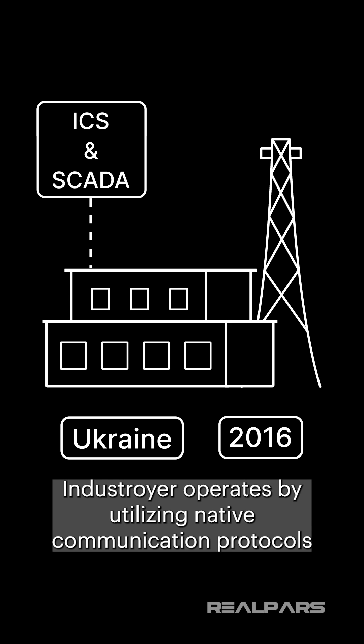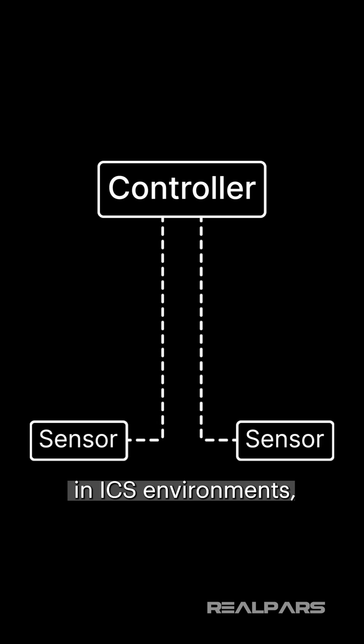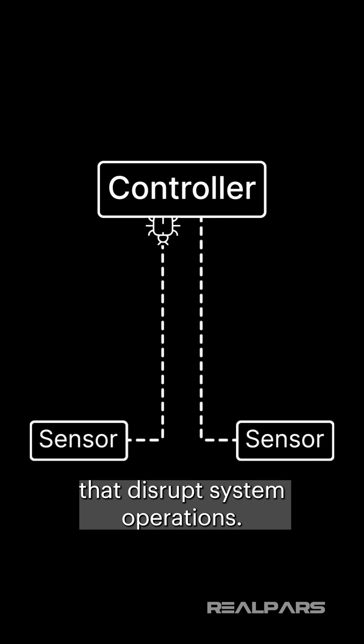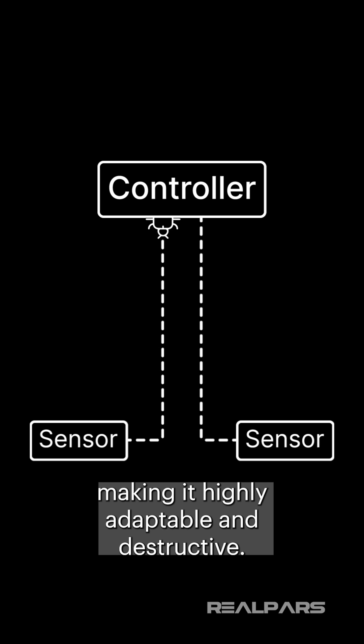Indestroyer operates by utilizing native communication protocols in ICS environments, enabling it to send malicious commands that disrupt system operations. The malware is modular in nature, making it highly adaptable and destructive.